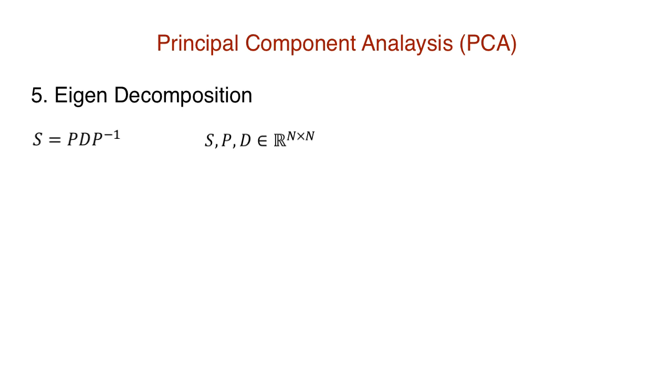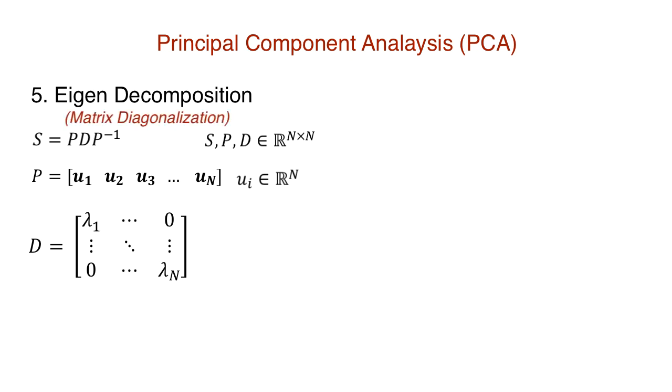Consider a square matrix S. The concept of eigendecomposition involves splitting or decomposing a square matrix into a product of three matrices. S is equal to P D P inverse, where P is a matrix of eigenvectors and D is a diagonal matrix whose diagonals consist of eigenvalues. A diagonal matrix has non-diagonal elements equal to zero. And for this reason, eigendecomposition is also called matrix diagonalization.